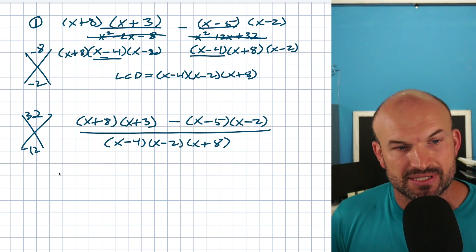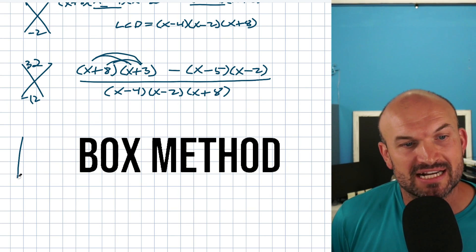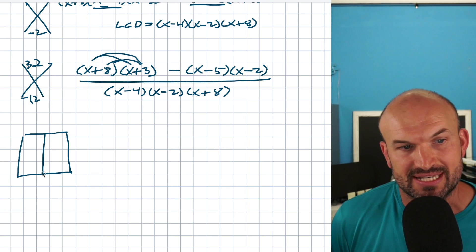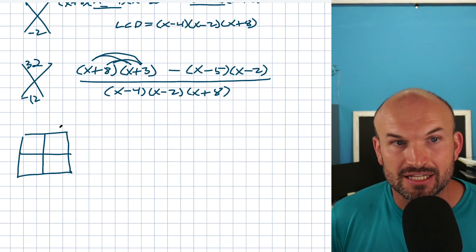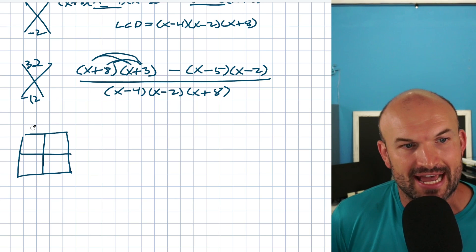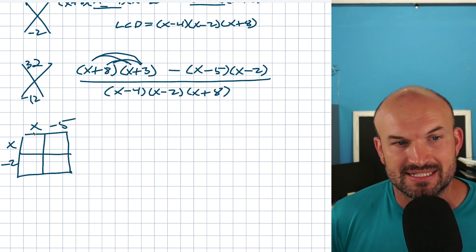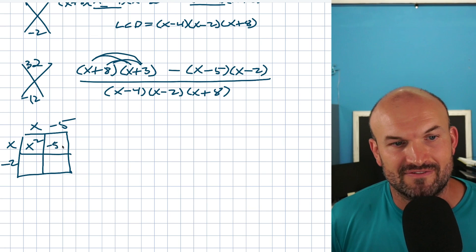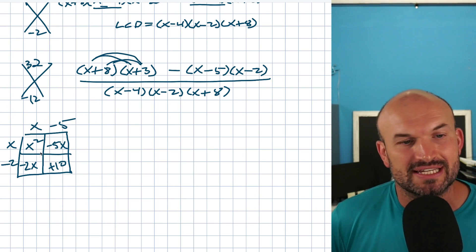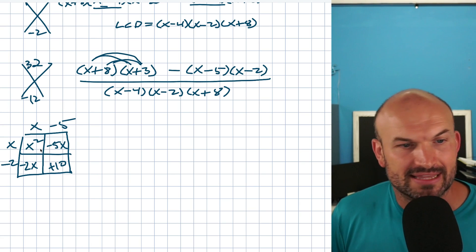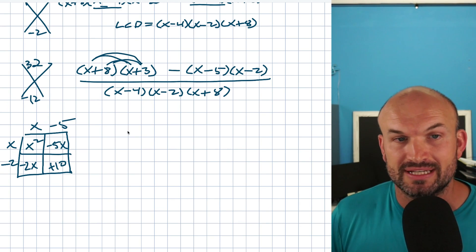Now I need to expand by multiplying my binomials. There are a couple of different ways — you could use FOIL or the distributive property, multiplying every term times every term, or you can use what we call the box method. I like to use the box method to avoid making mistakes. Basically, any time you're multiplying two expressions, you make a column and a row for each of those terms. So for (x - 5)(x - 2): x times x is x², x times negative 5 is -5x, x times negative 2 is -2x, and negative 2 times negative 5 is positive 10. The common terms, as long as everything is in descending order, are going to be listed on the diagonal.